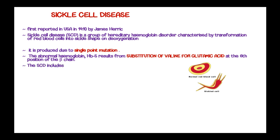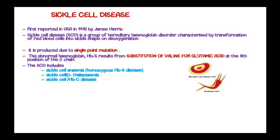Sickle cell disease includes sickle cell anemia, that is the homozygous HbS disease and the most common form, sickle cell beta-thalassemia, and sickle cell HbC disease. These are the three most common forms of sickle cell disease.